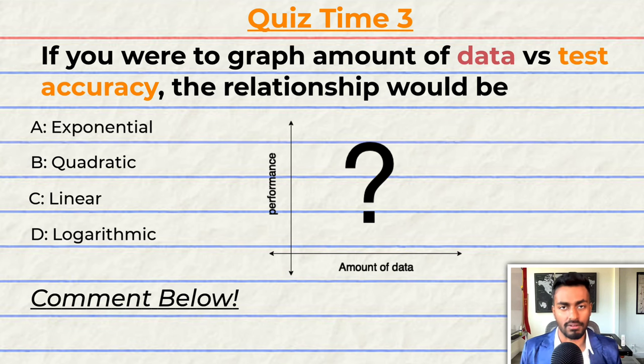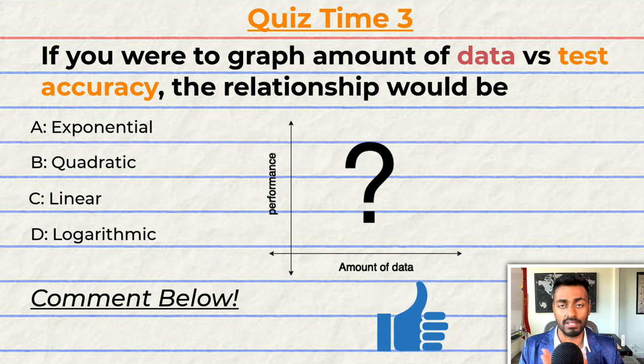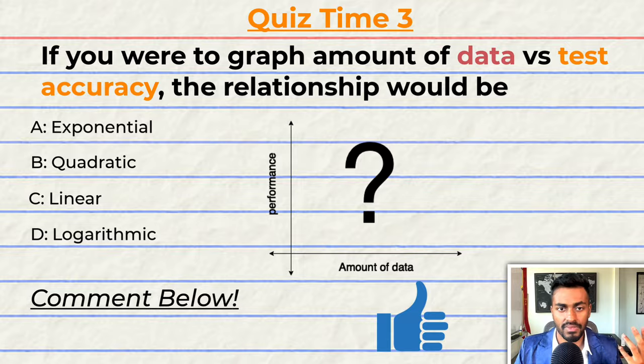This is going to be a fun one. If you were to graph the amount of data on the x-axis and test accuracy on the y-axis, the relationship would look A, exponential, B, quadratic, C, linear, or D, logarithmic. Comment your answer down below and let's have a discussion. And if you think I do deserve it at this point, once again, please do consider giving this video a like because it will help me out a lot. And that's going to do it for quiz time and past three of this explanation. But before we go, let's generate a summary.